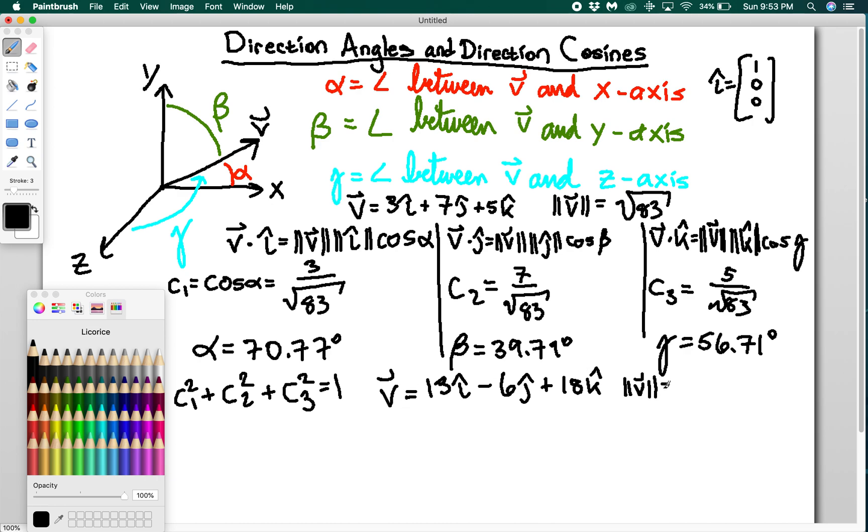So then I'm just going to read it off. C1 is 13 over root 23, C2 is negative 6 over root 23, and C3 is equal to 18 over root 23.